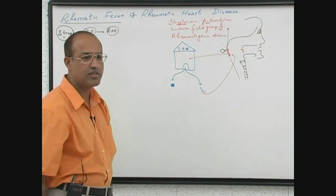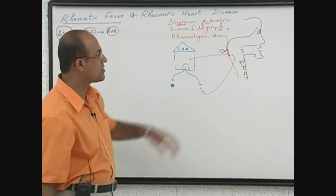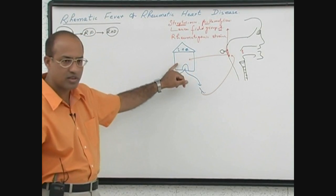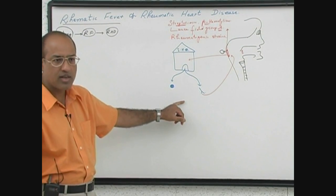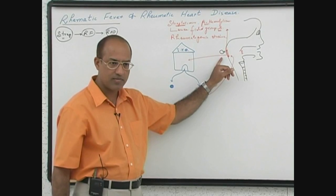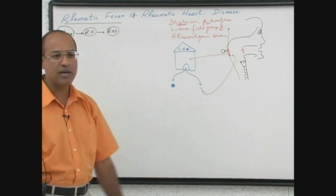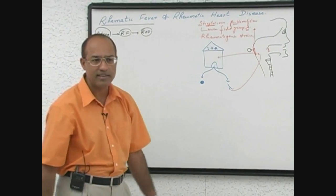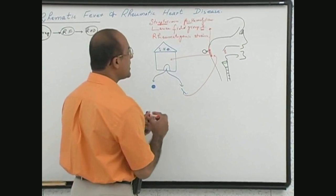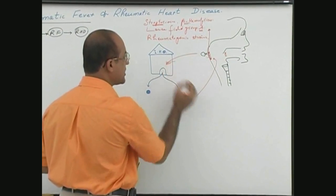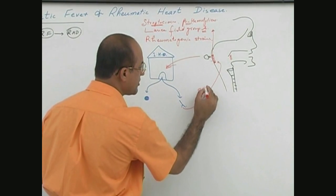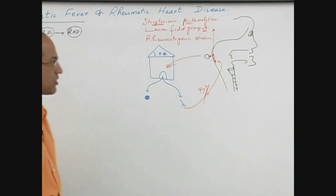This is what ideally should happen: when a person suffers with streptococcal infection in the throat, the immune system is activated, an immune response is generated, and this response eventually eliminates the bacteria. This type of situation is true in about 97% of cases.